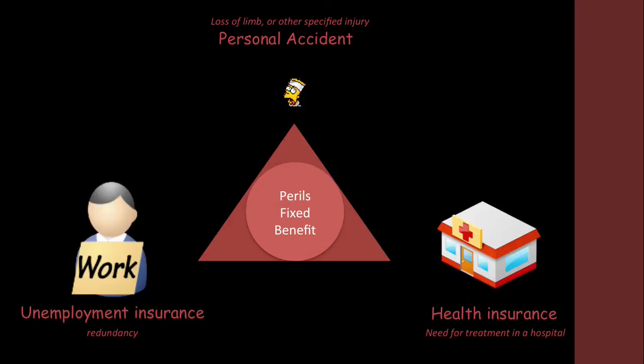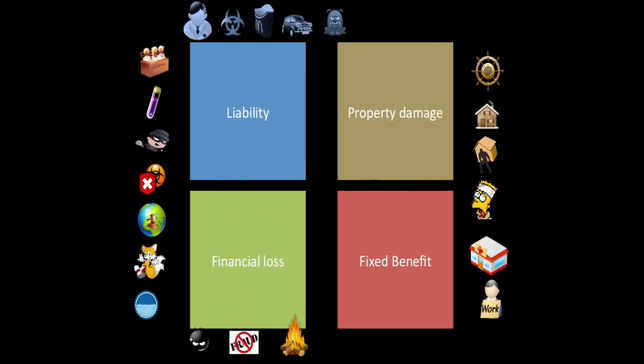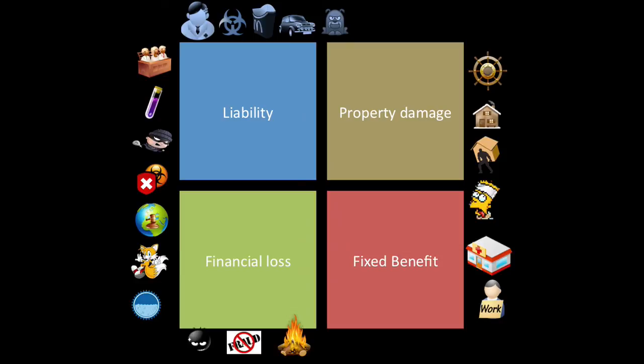Finally, we have fixed benefit perils: personal accident such as loss of a limb, health insurance for when you need treatment in a hospital, and unemployment insurance when you become redundant. Hopefully us actuaries will never have to experience that unless they create a supercomputer. And that's all the things we looked at in this chapter — nice and short. Study hard.